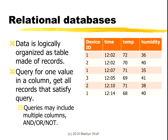We can also search the database in different ways. We could ask, for example, what records have a time of 12:02. In that case, we would get two records — one for device ID 1 and one for device ID 2. When we query, we can ask for the values in a single column, or we can combine things. For instance, we could say device ID 1 and time equals 12:02 — that would give us this one record. So we can test values and do Boolean combinations. Once we have those records, our application can do interesting things with the values and also update the database.